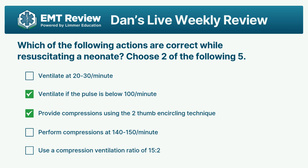Ventilations: 40 to 60 a minute. Compressions are at the same rate as an adult. The key points: two-thumb encircling technique, absolutely correct. We ventilate if the pulse is below 100, and we provide CPR compressions if the pulse is below 60.